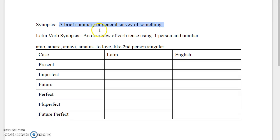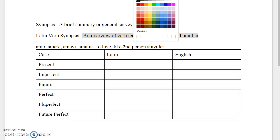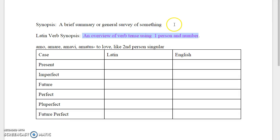And a Latin verb synopsis is an overview of verb tense using one person and number. Okay so that means we're going to focus only on one person and number like first person singular, second person plural, those types of things here.